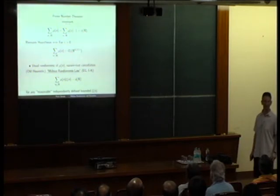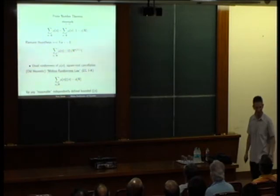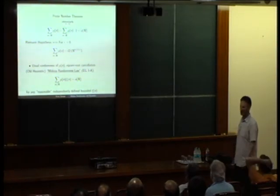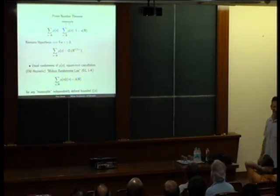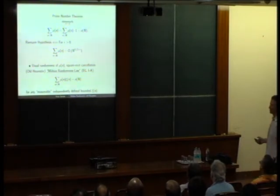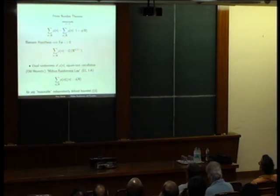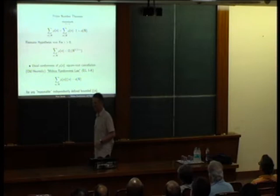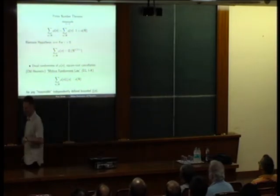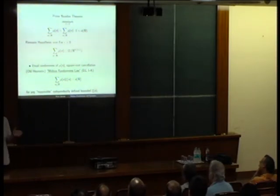Nobody knows how to make this precise — but I will make it precise today. I asked Iwaniec what this means; he says: give me xi and I'll tell you whether it's supposed to cancel. If xi is Möbius itself, it won't cancel. But if xi doesn't know about Möbius, it'll cancel. The philosophy is: Möbius is sufficiently random that it'll overcome any sequence which doesn't know about it. The better way is: if xi has low complexity and Möbius has high randomness, then it'll cancel.